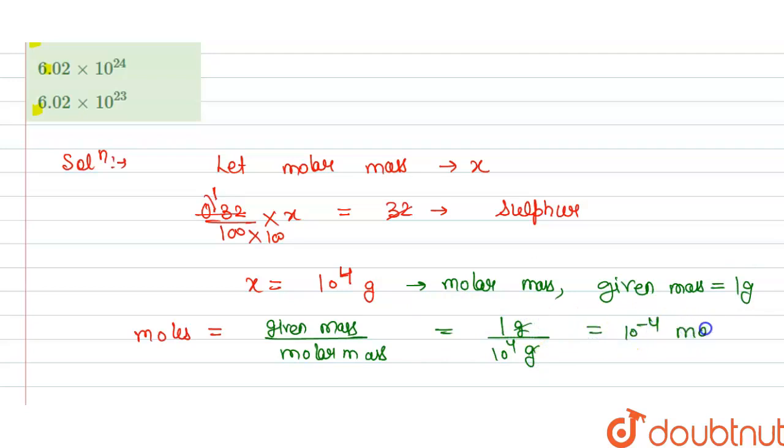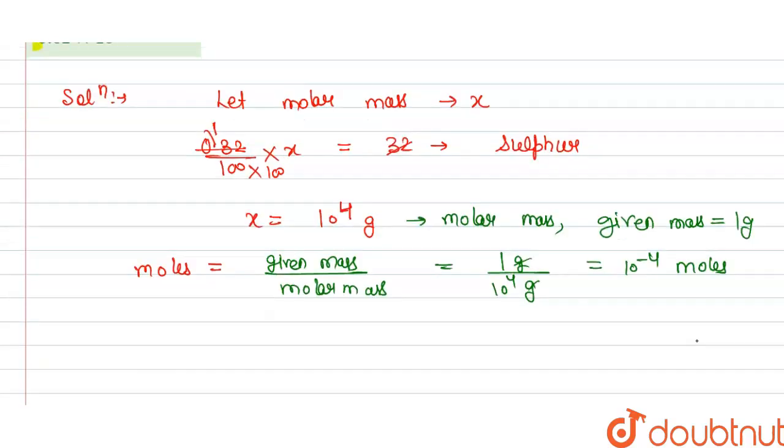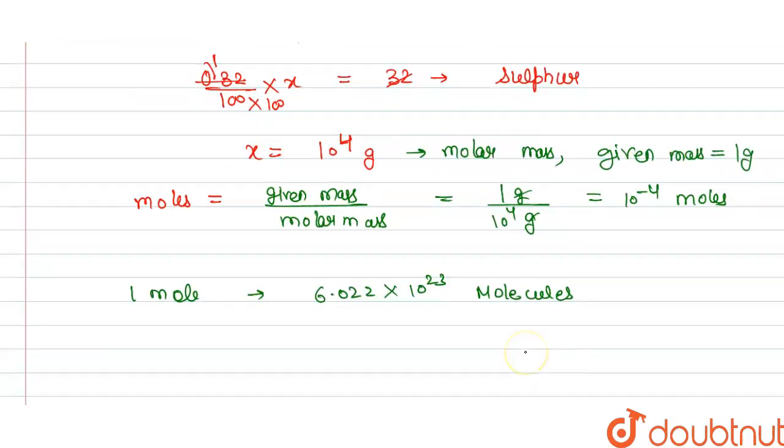So we have 1 mole has 6.022 into 10 power 23 molecules, and we have here 10 power minus 4 moles. So it will become 6.022 into 10 power 23 multiplied by 10 power minus 4...